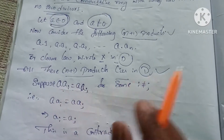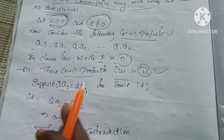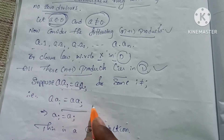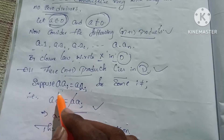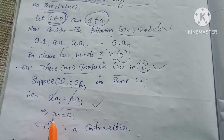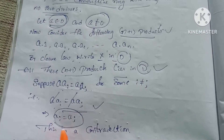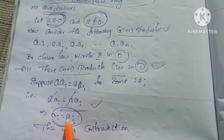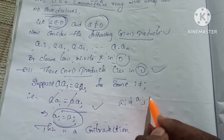That is, a·ai = a·aj. By the left cancellation law, we can cancel a, giving ai = aj. But we assumed i is not equal to j, so ai should not equal aj.